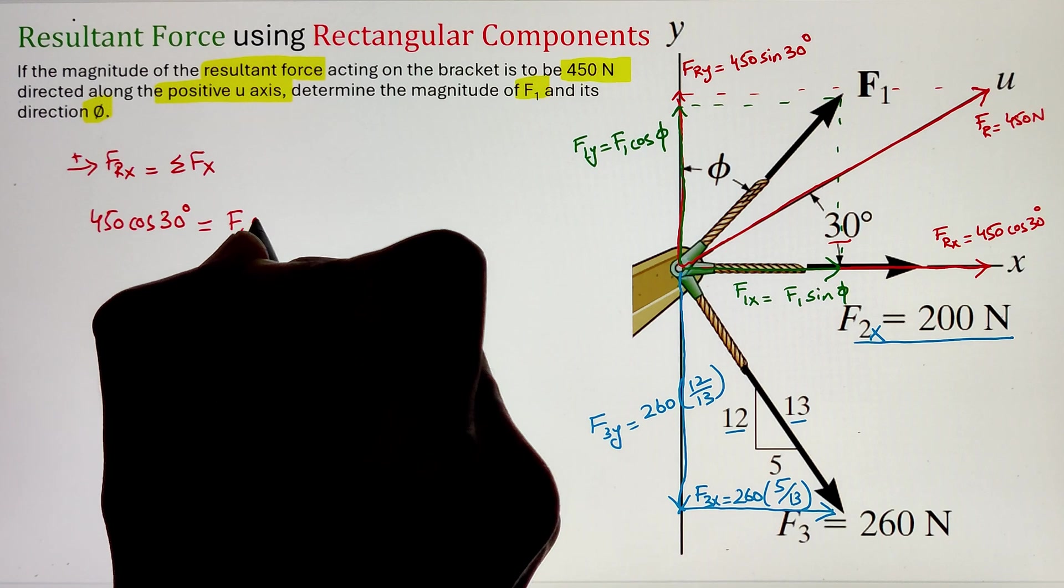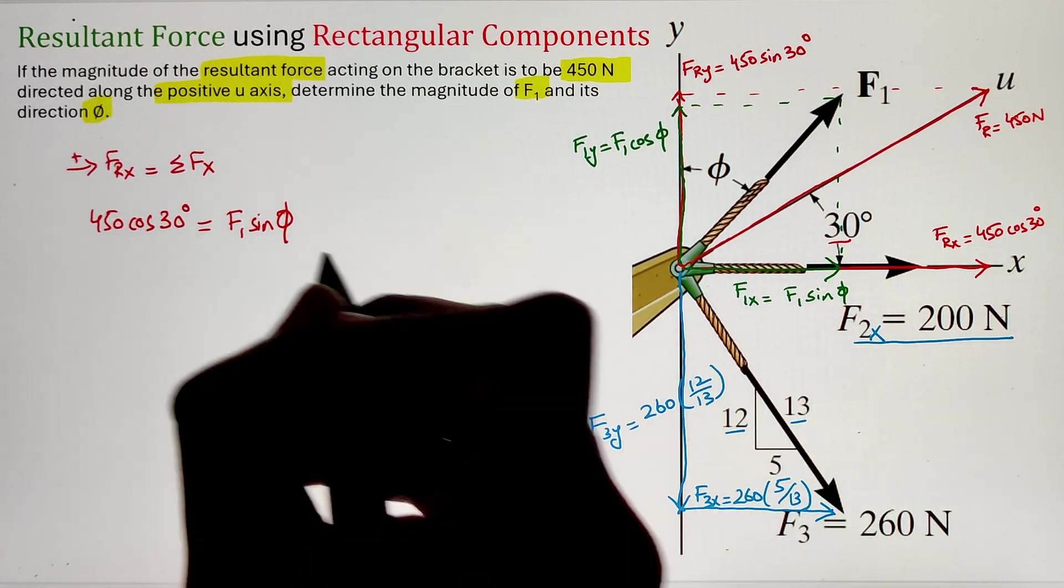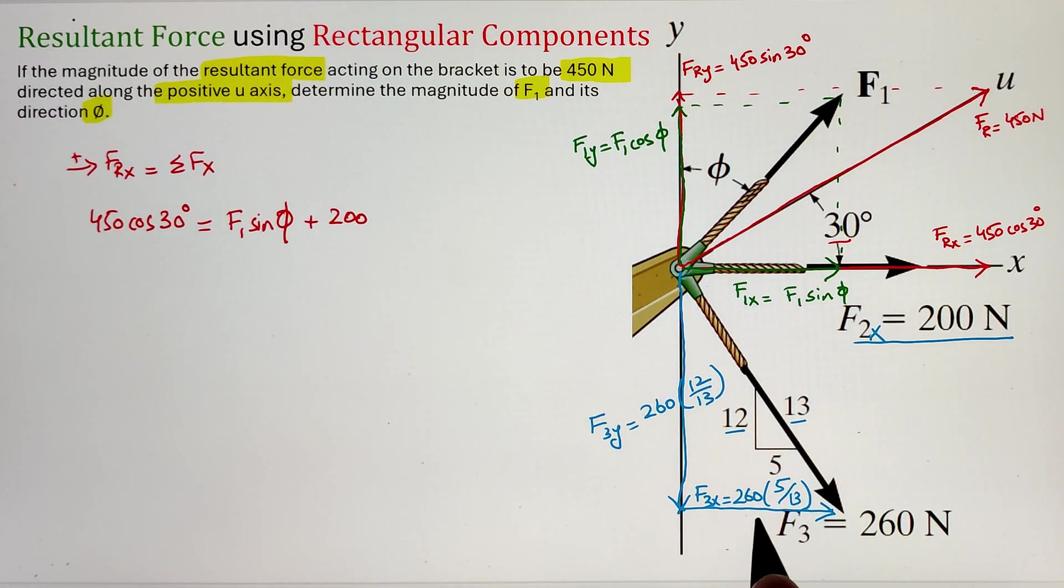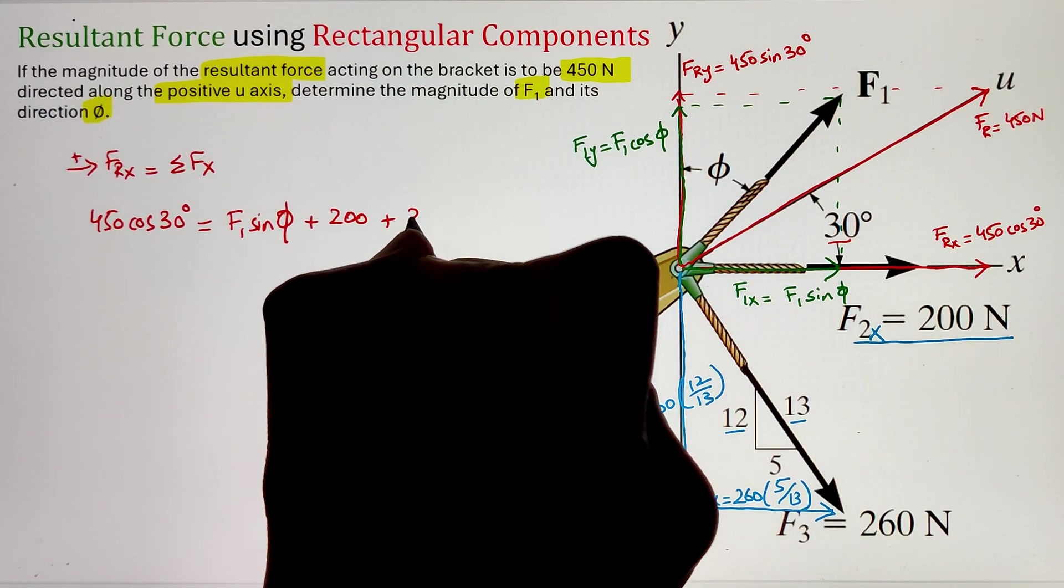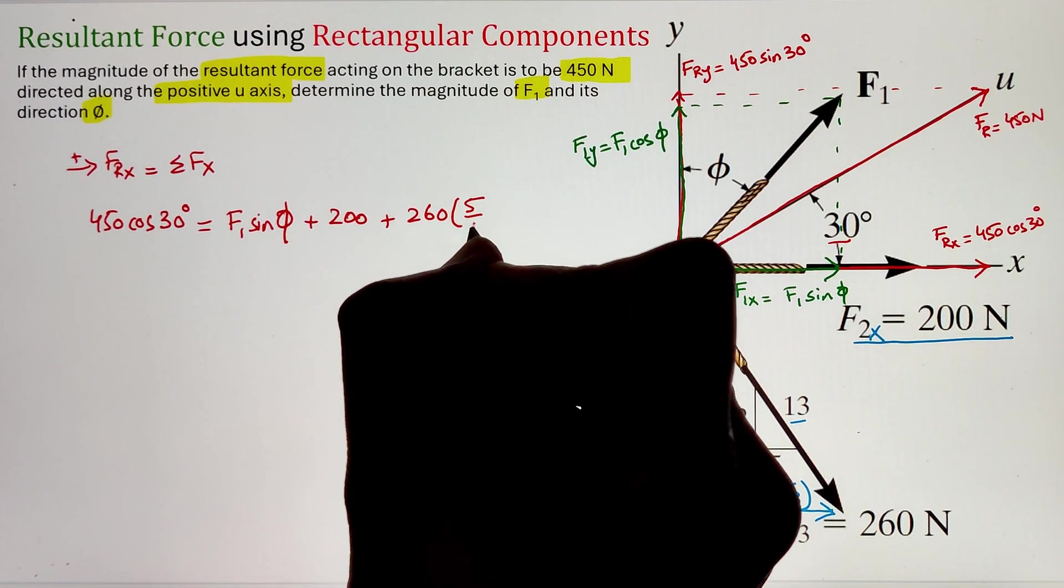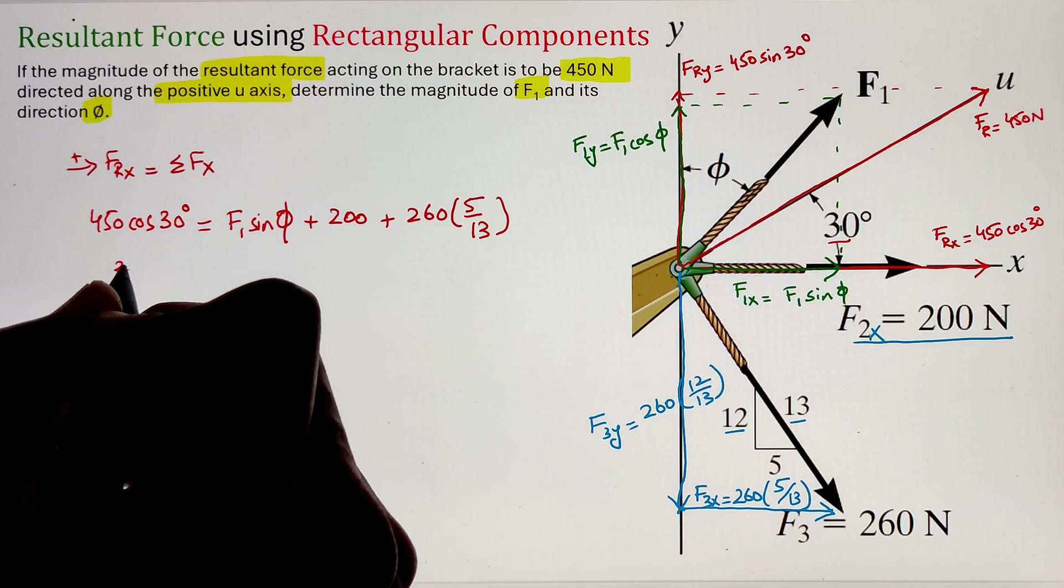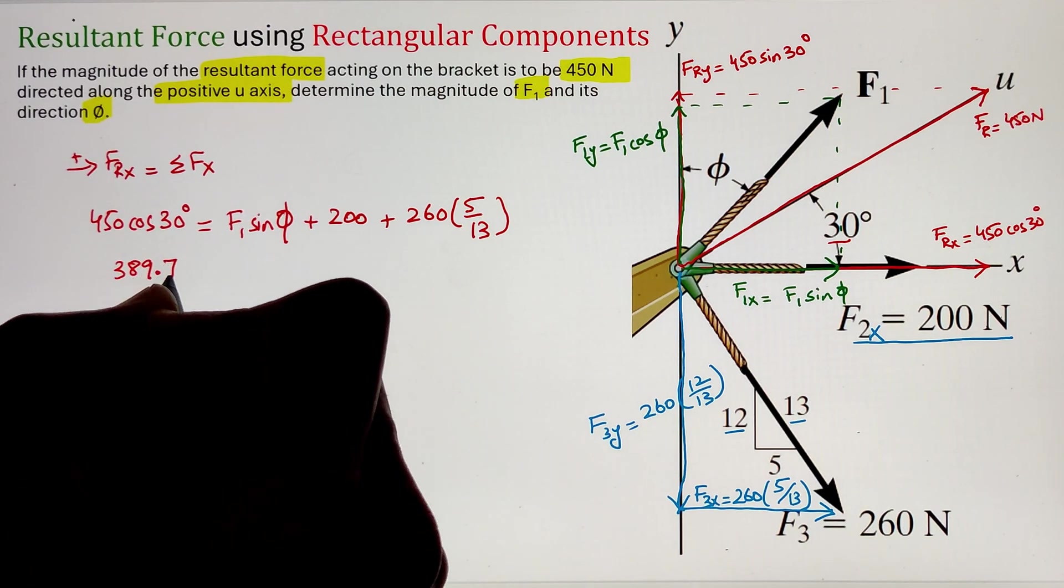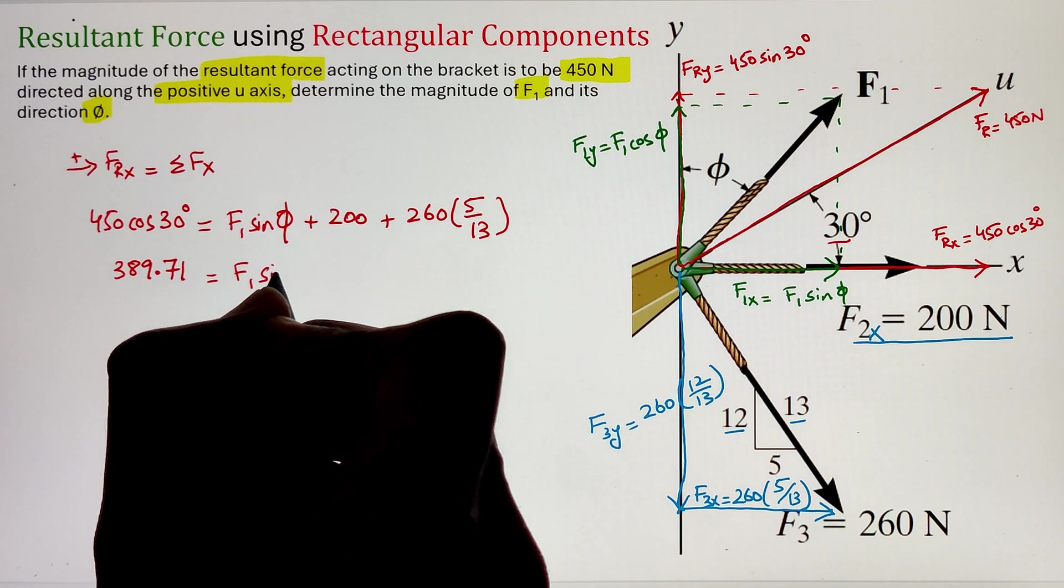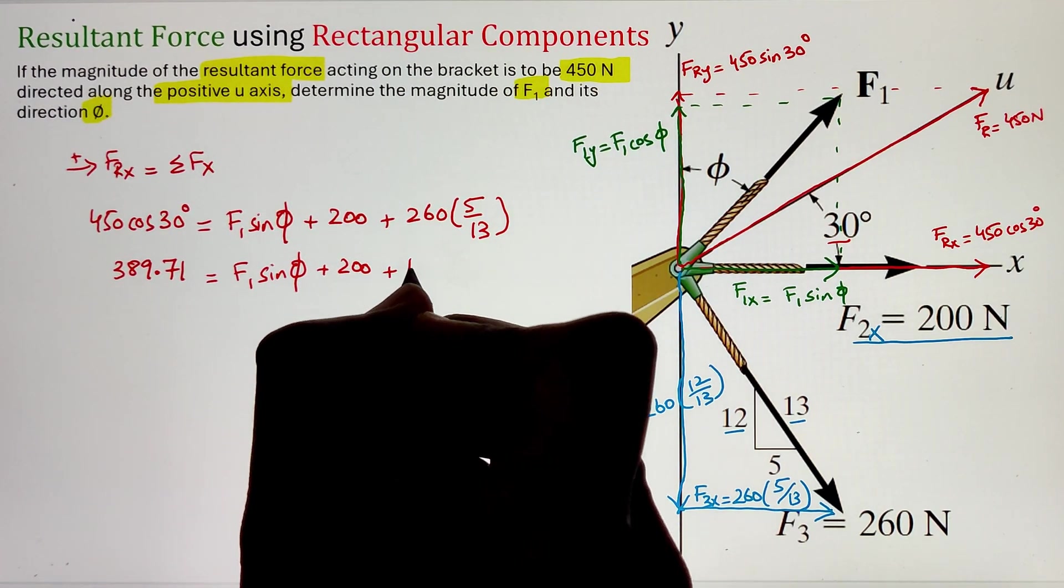we can go ahead and equate the resultant force component along the x-direction with the sum of all the force components along the x-direction. Here, we have our resultant x of 450 cos 30 that equals the x-component of force F1 along the x-direction, that is F1 sine phi, plus 200, plus our F3x component of 260 times 5 over 13.